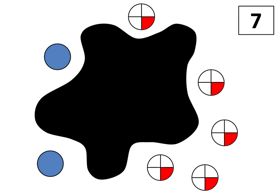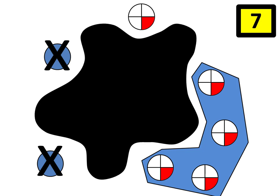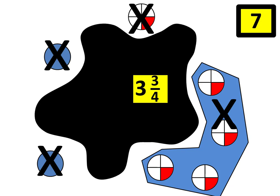Solution number three also uses a counting strategy, but instead of counting forward, the strategy is to count back. Since I know the total is seven and I can see part of it, I'll count back from seven: six, five, four. From four, I need to subtract one-fourth. Four minus one-fourth is three and three-fourths. That is the answer.